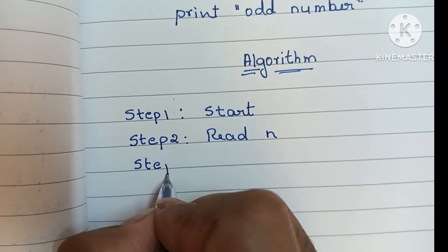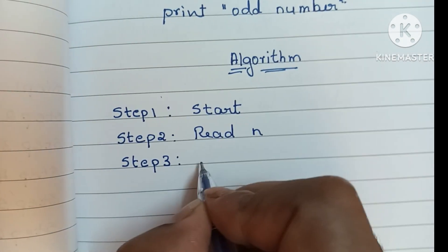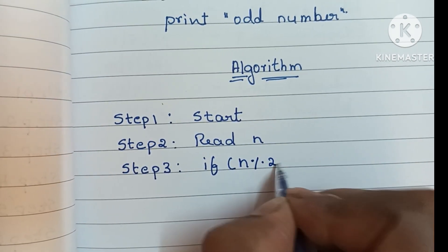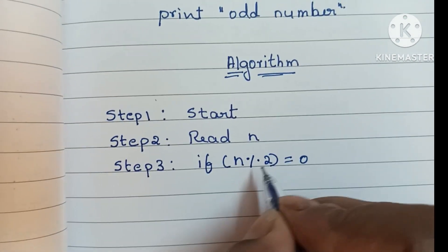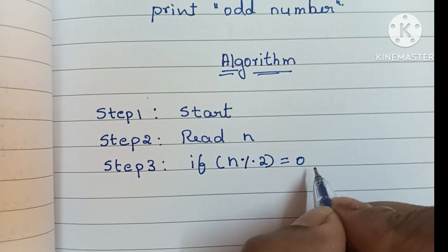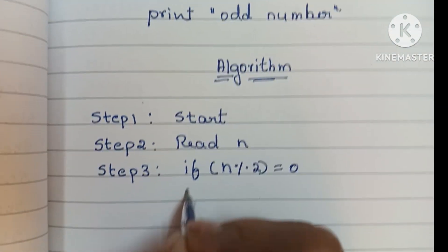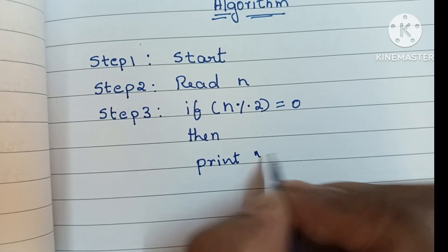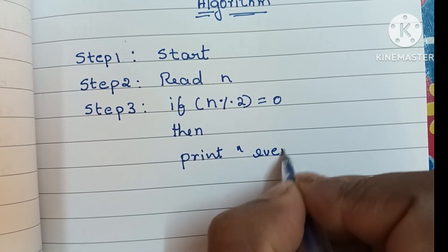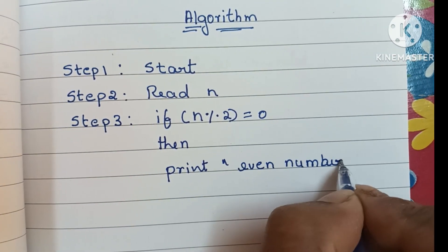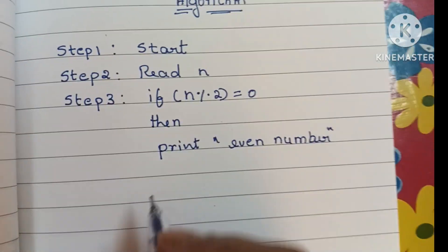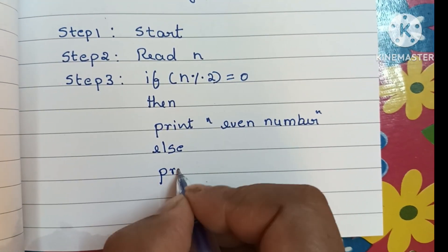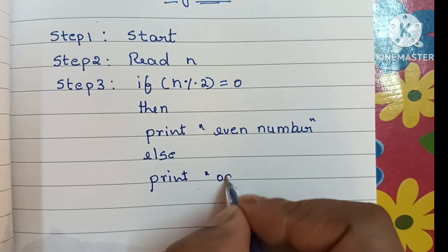Step 3: we check if n modulo 2 is equal to 0. If this condition is true, then we print even number. Else, we print odd number.